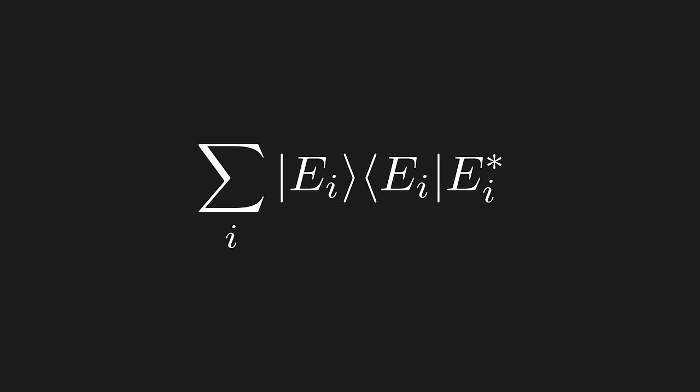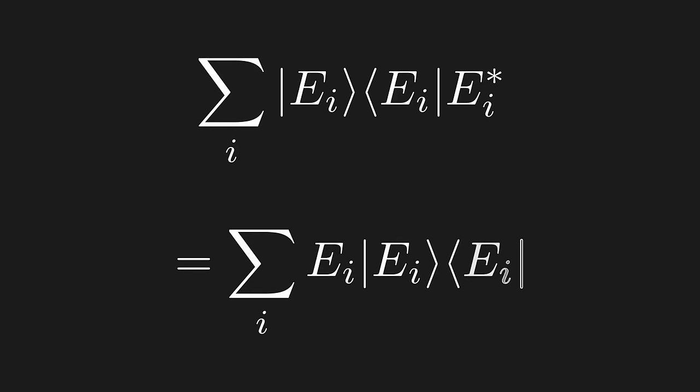Remember that the eigenvalues have to be real, since these represent the outcome values that we can measure. So, this just gives us the same eigenvalue, and we can move it back to the left, since it's a scalar.